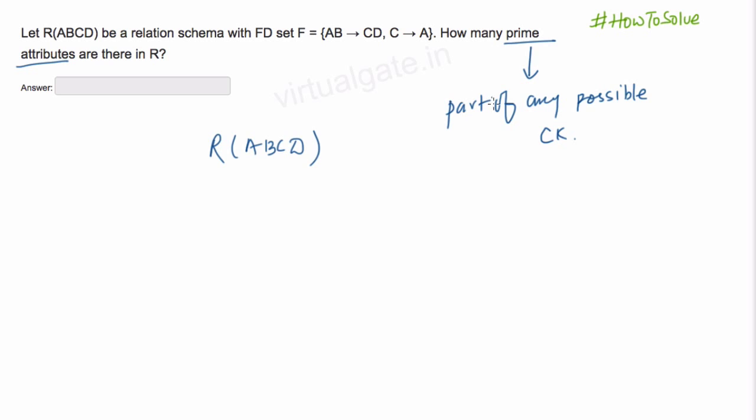Similarly we have non-prime attribute. Non-prime attribute is the attribute which is not part of any of the candidate keys. To find out how many prime attributes we have, first we need to find out the candidate key.